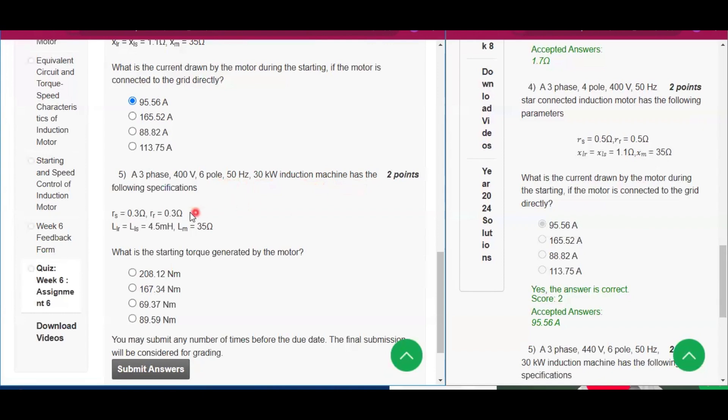Question number five: A three-phase 400 volt six-pole 50 hertz 30 kilowatt induction machine has the following specification: Rs equals 0.3 ohm, Rr equals 0.3 ohm, Llr equals Lls equals 4.5 millihenry, Lm equals 35 ohm. What are the starting torque generated by the motor?